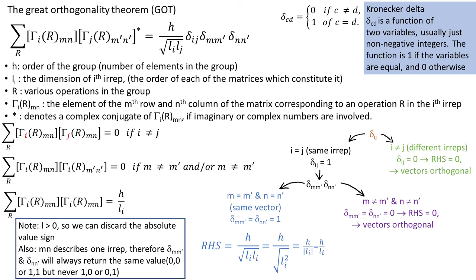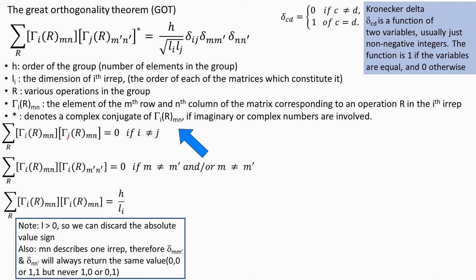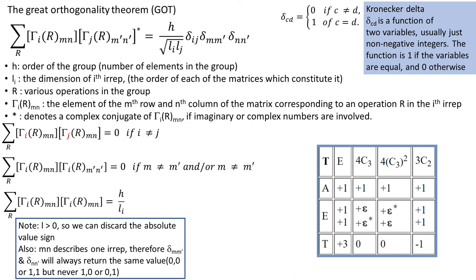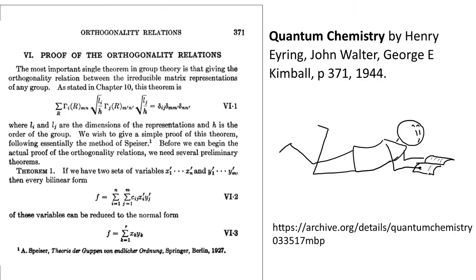Sorry I forgot to mention this star sign. It denotes complex conjugate of tau IRMN. For instance in T group imaginary numbers are involved but will not be dealing with such groups at least for now. The proof of the great orthogonal theorem is given in this book. You might need an assistance of someone who knows bit more maths, not that your professor will demand that you know this proof, but in case you are curious you will know where to find it.